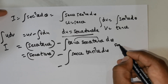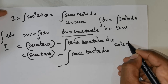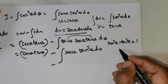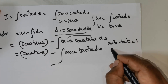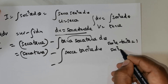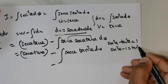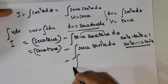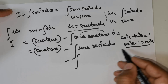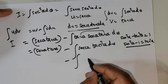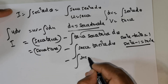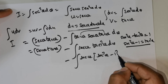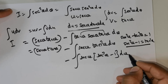Now secant square theta minus tan square theta is equal to 1, so I can write secant square theta minus 1 is equal to tan square theta. In place of tan square theta, I'm going to write secant square theta minus 1, so I get secant theta times (secant square theta minus 1) times d theta.